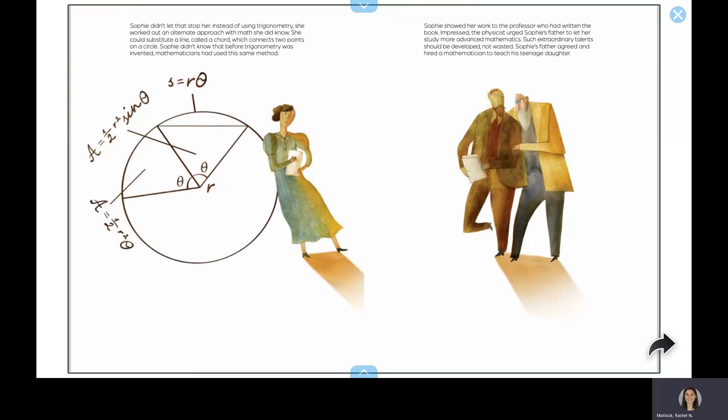Sophie showed her work to the professor, who had written the book. Impressed, the physicist urged Sophie's father to let her study more advanced mathematics. Such extraordinary talents should be developed, not wasted. Sophie's father agreed and hired a mathematician to teach his teenage daughter.